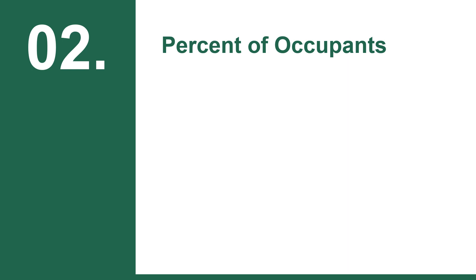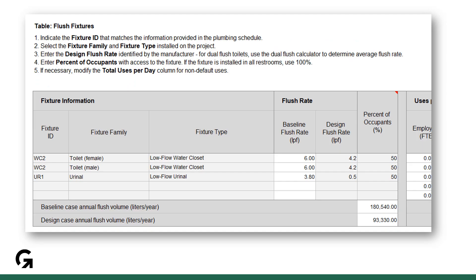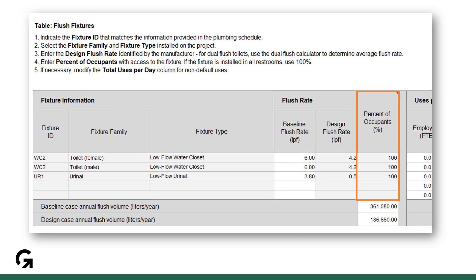Issue 2 is with the column percent of occupants. If you scroll down the calculation tab, you will see the flush fixture table and the flow fixture table. The title of this percent of occupants column can be misleading, as one might think my building has half women, half male — that's 50% each. No, in this case, it's percent of occupants of each gender.